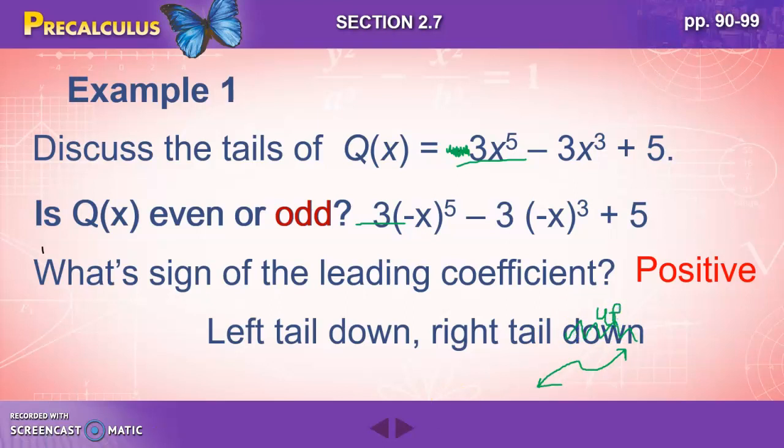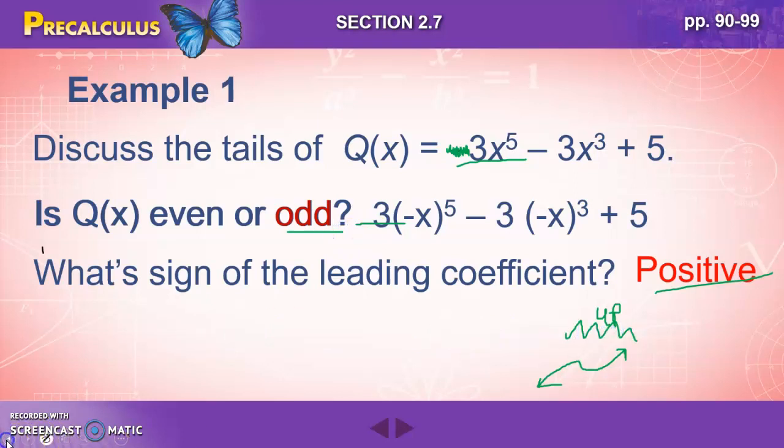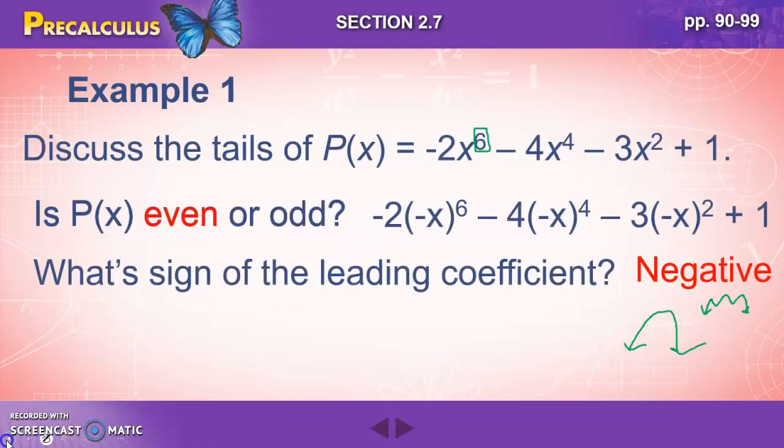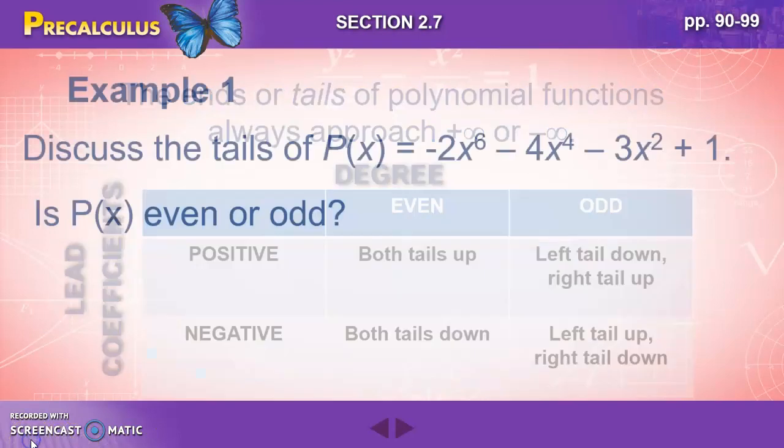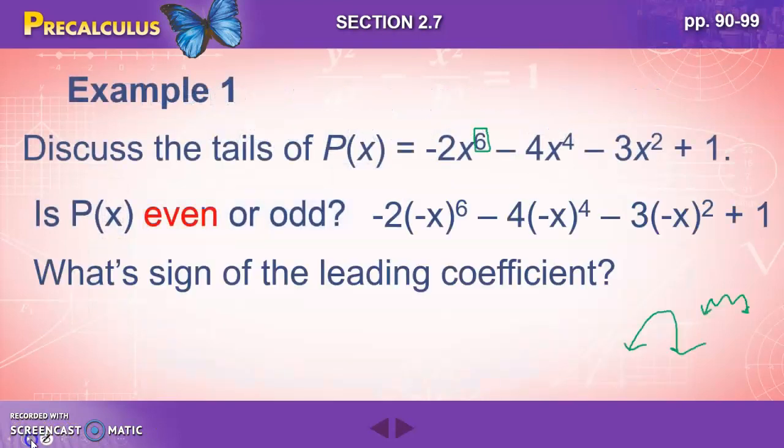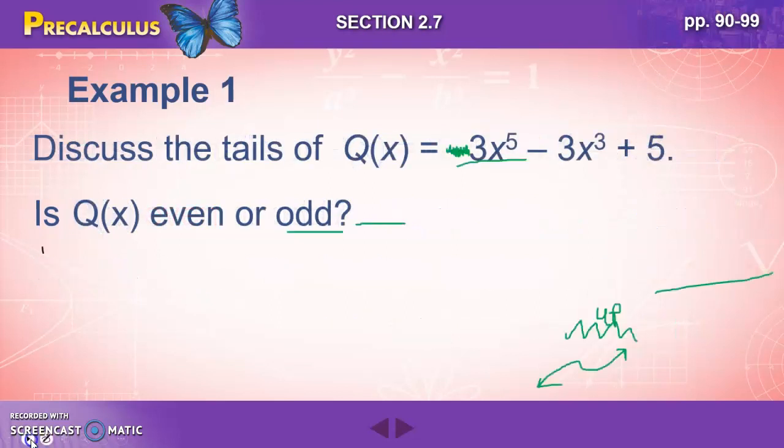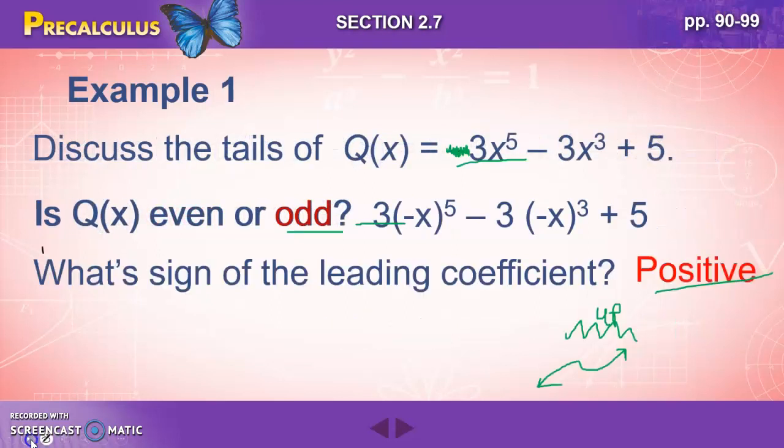That should say left tail down and right tail up. Let's make sure I have that correct. Positive coefficient with an odd degree. Positive coefficient, odd degree. Left tail down, right tail up. All right. Now negative coefficient with an odd degree would be the other way. But either way, our tails are going in two different directions. So that is another typo on that slide that I did not catch. Sorry about that.